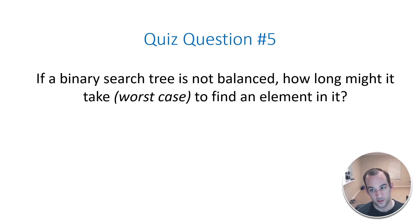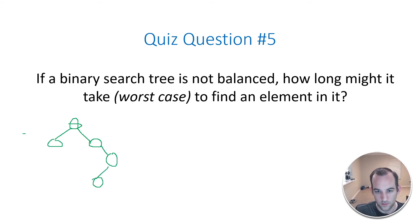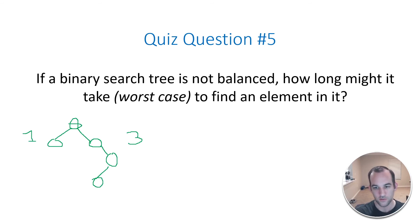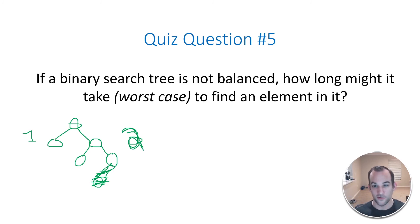Alright, question number five. If a binary search tree is not balanced, how long might it take in the worst case to find an element in it? You have to understand what a binary search tree is and what balanced means. A balanced binary search tree is when the depth of the left subtree and right subtree differ by not more than 1. For example, if the left subtree has a depth of 1 and the right has a depth of 3, then 3 minus 1 is 2, which is greater than 1 — so that is not a balanced binary search tree.